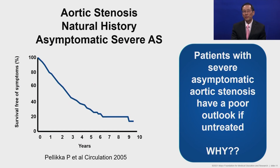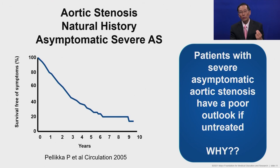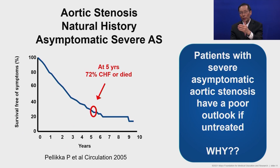However, since then, a number of studies have looked at the natural history of patients who did not have symptoms and whose ventricular function remained normal. Patients with severe asymptomatic aortic stenosis still have a poor outlook if left untreated. At five years, about three out of four patients will have developed heart failure or died. So it was clear that if we waited for symptoms or ventricular dysfunction to occur, we were waiting too long.